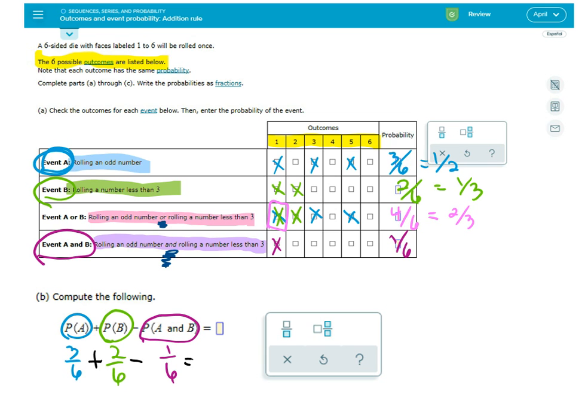So three sixths plus two sixths is five sixths - sorry about that, that was my daughter going out the front door - three sixths plus two sixths is five sixths minus one sixth is four sixths, which could also be reduced down to two thirds.